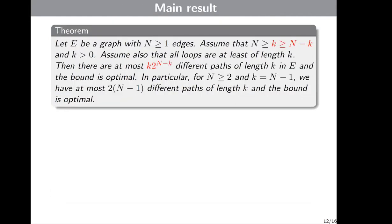The main result — a special case where K is greater than or equal to N minus K. Let E be a graph with N greater or equal to 1 edges, and K between N minus K and N, assuming loops of length at least K. Then there are at most K·2^{N-K} different paths of length K in graph E, and the bound is optimal. In particular, if N is greater or equal to N minus 1, we have at most 2(N-1) different paths of length K, and the bound is optimal.